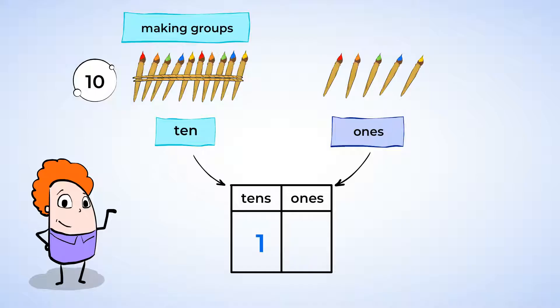Under the word 1s, we're going to write the number of single paintbrushes we have. And we have 5 paintbrushes, so let's write that number here, 5. And can you read the number in the chart? It's 15. This means that 1 10 and 5 1s is actually the number 15.